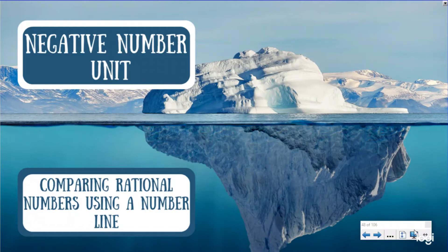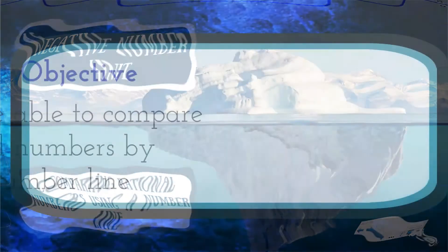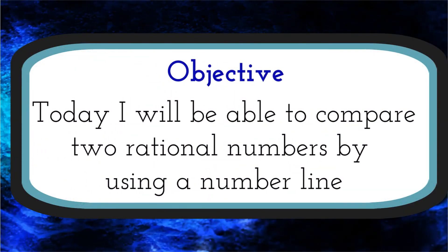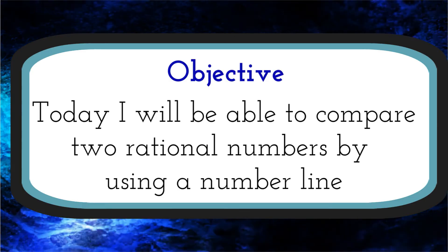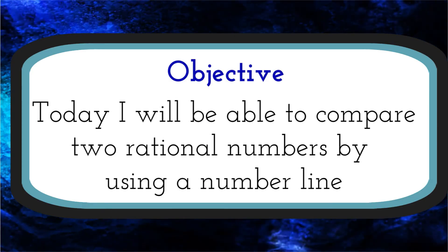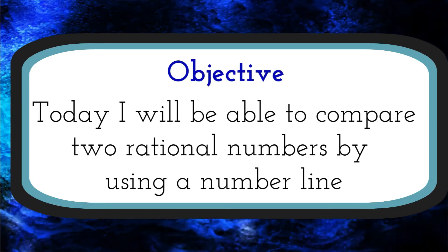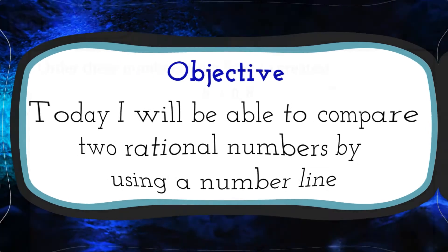What up everybody, back again here with our negative number unit. We're going to be looking at comparing rational numbers using a number line today. Our objective is: I will be able to compare two rational numbers by using the number line.